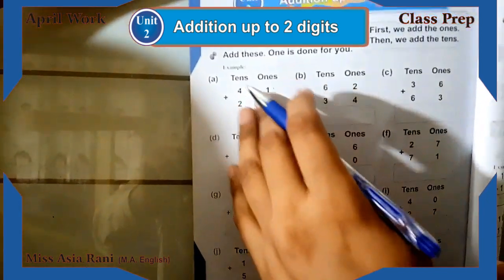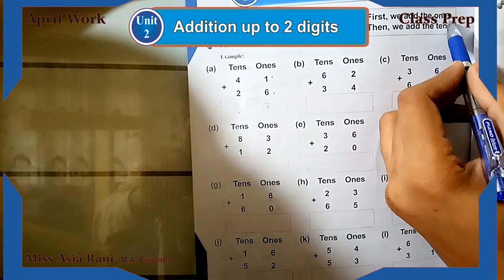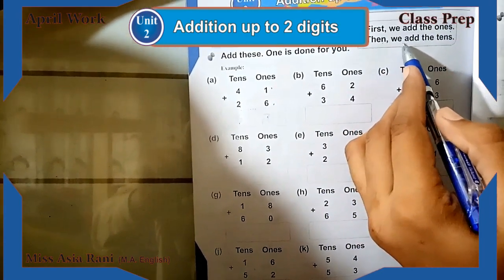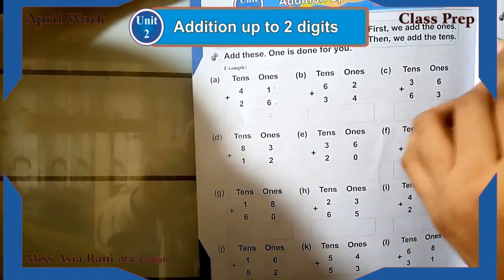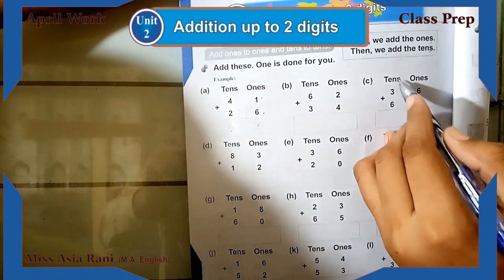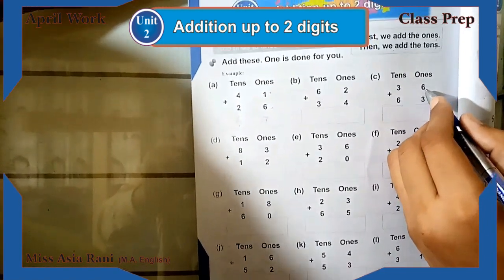The rest of the questions you have to do. First we add the ones, and then we add the tens. For the next one, we have six. We have to count six lines.